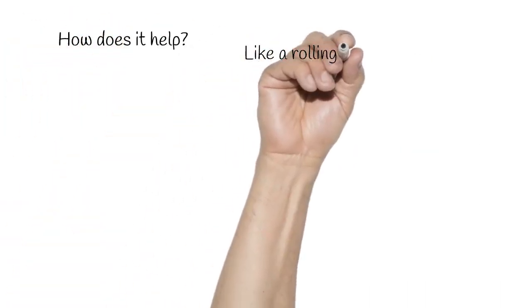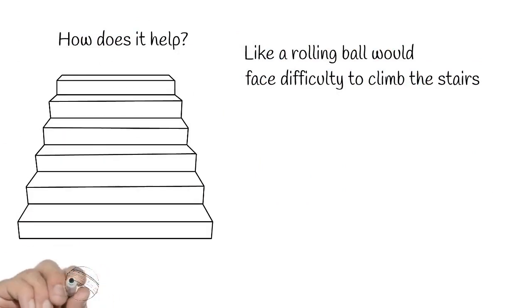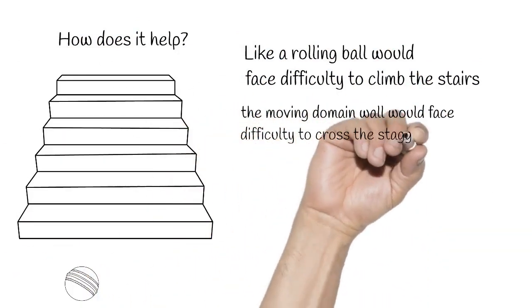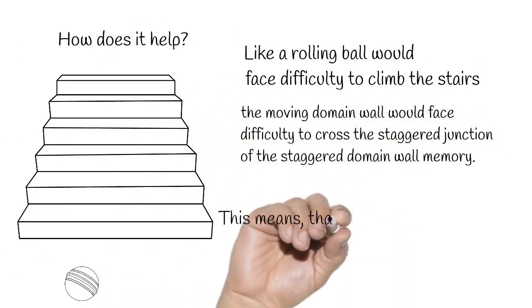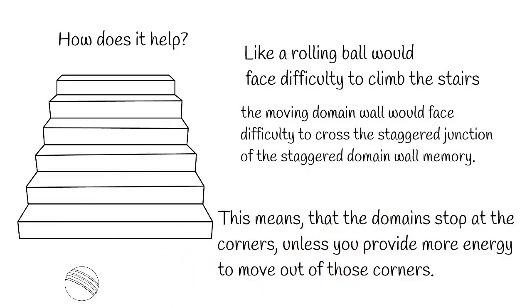How does it help? Like a rolling ball would face difficulty to climb the stairs, the moving domain wall would face difficulty to cross the staggered junction of the staggered domain wall memory. This means that the domains stop at the corners, unless you provide more energy to move out of these corners.